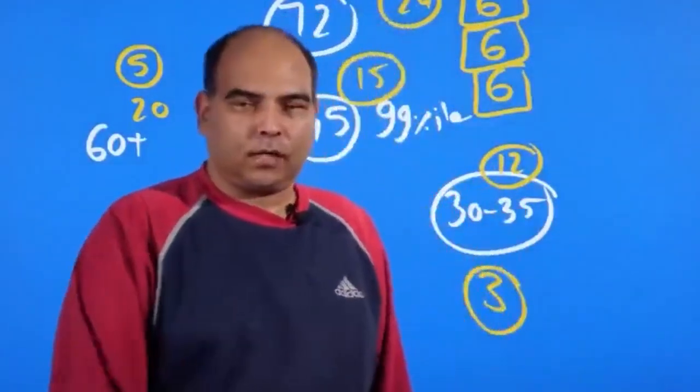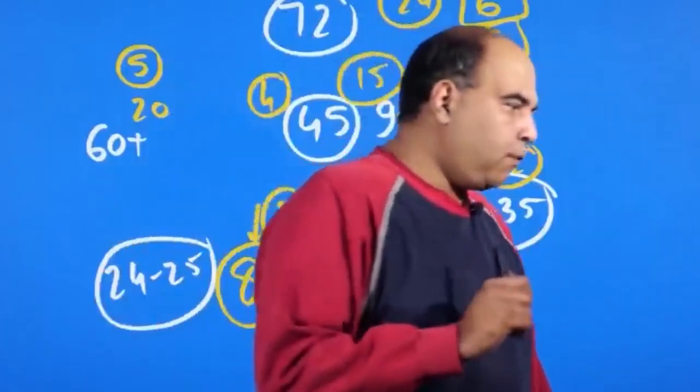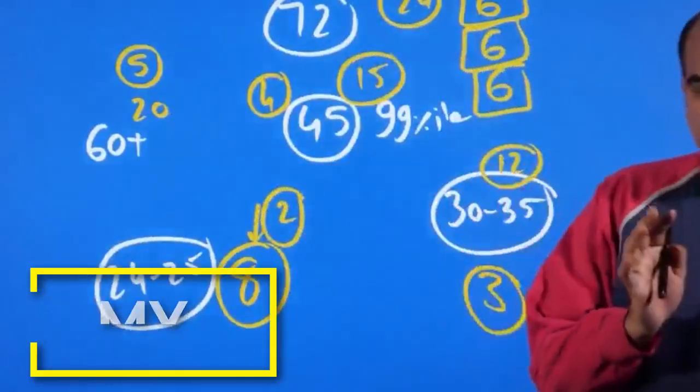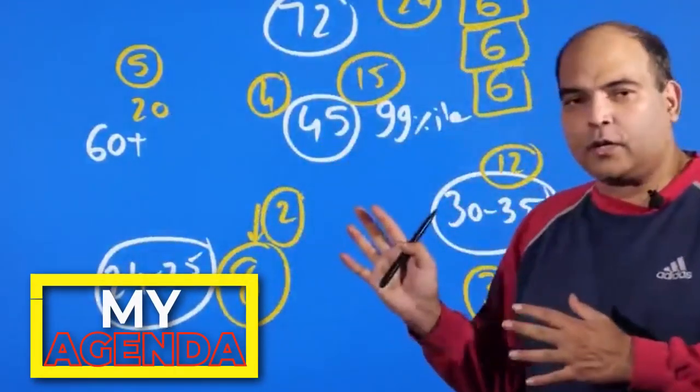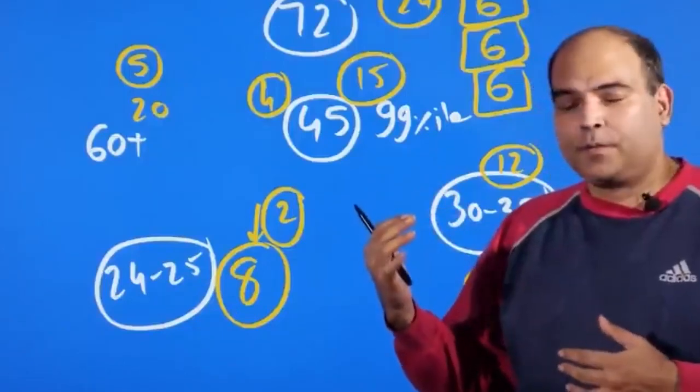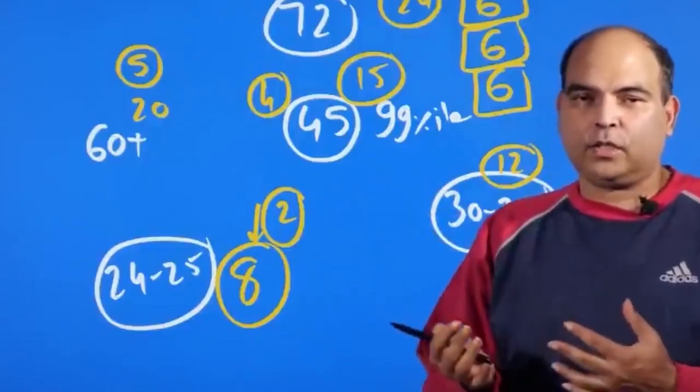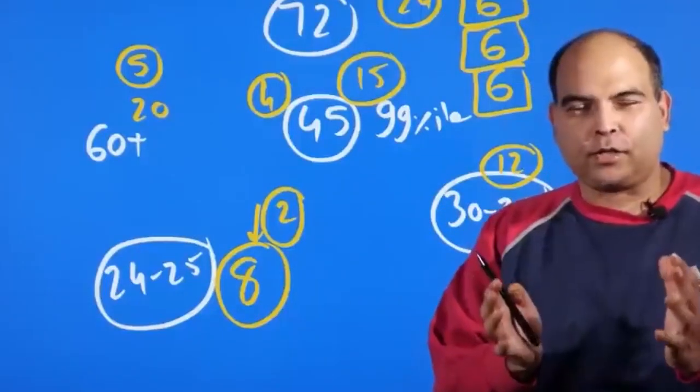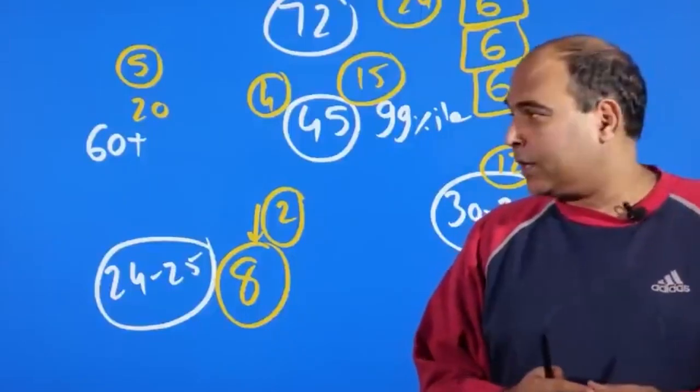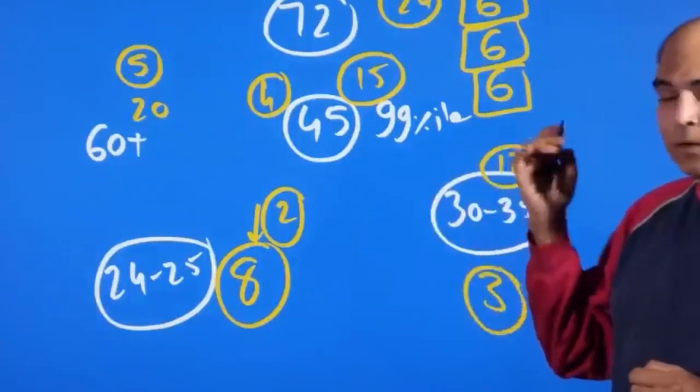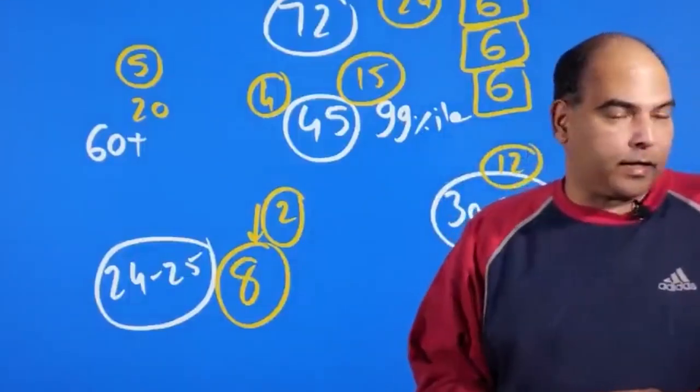Before I start, suppose I'm aiming for 60-plus, my pressure on this band of six questions is I should get five questions right. If I'm aiming for 45, 99 percentile, my challenge is to get four questions right there.